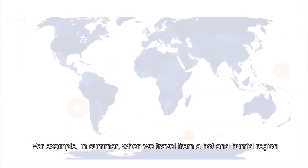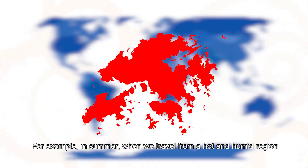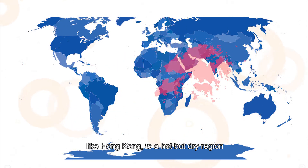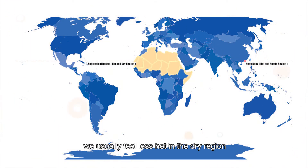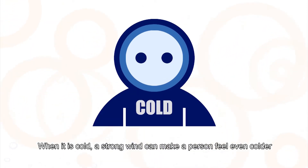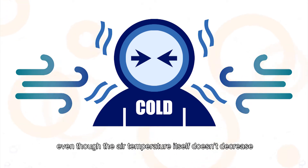For example, in summer when we travel from a hot and humid region like Hong Kong to a hot but dry region, we usually feel less hot in the dry region even when the air temperatures in the two regions are the same. When it is cold, a strong wind can make a person feel even colder, even though the air temperature itself does not decrease.